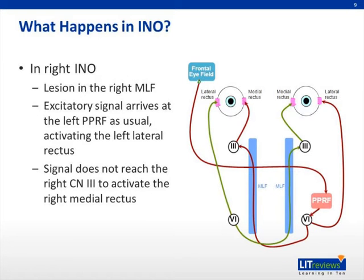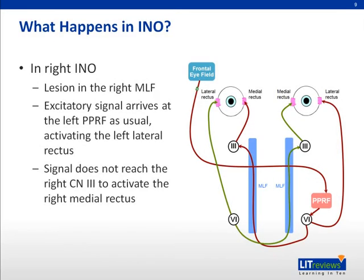In right INO, there is a lesion in the right medial longitudinal fasciculus, or MLF. The excitatory signal from the left paramedian pontine reticular formation is interrupted at the right MLF. Hence, there is no signal to the right oculomotor nucleus, and consequently no movement in the right medial rectus, thus impaired right eye adduction.